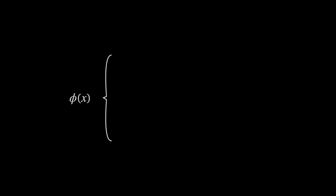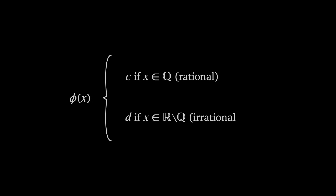He found that you can construct such a function, phi of x, that's equal to a constant c when x is rational and a different constant d when x is irrational. This way, phi flips between c and d infinitely often and is never continuous.